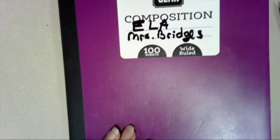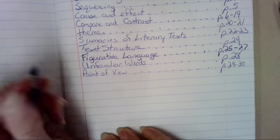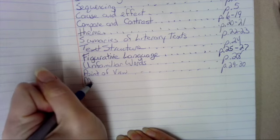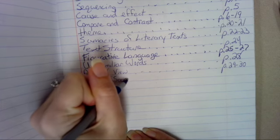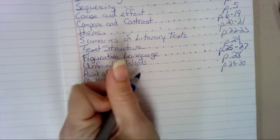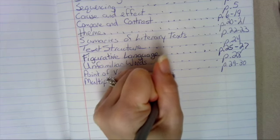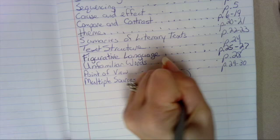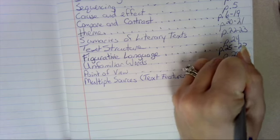In your ELA notebook, you'll turn to the table of contents and write 'multiple sources,' and in parentheses write 'text features,' dot dot dot, page 31 to 32.